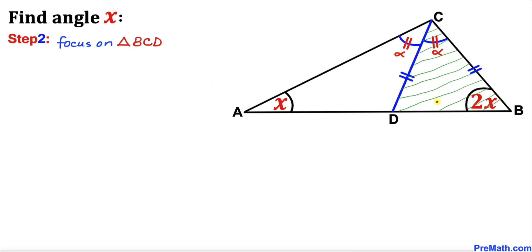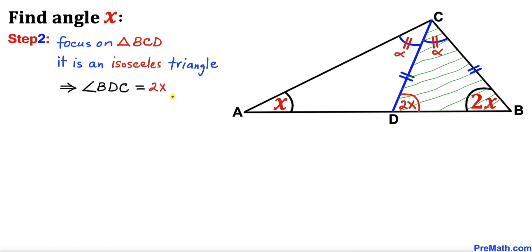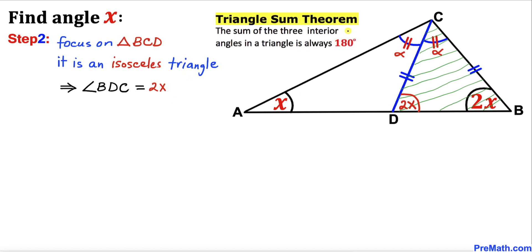Now let's focus on triangle BCD. Since this is an isosceles triangle with CD equal to BC, angle BDC equals 2x as well. Recalling the angle sum theorem, the sum of angles in triangle BCD must be 180 degrees.